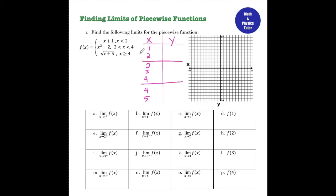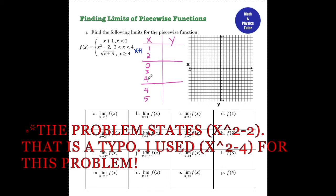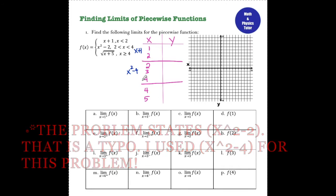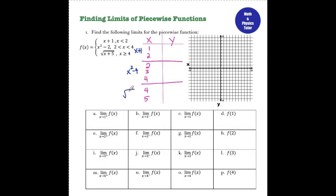When I set up my table you can see that I split my table into three different pieces. I repeated x equals 2 twice to account for each of these pieces and I repeated x equals 4 to account for each of these pieces. Since this is 2 and numbers less than 2, I'll be graphing x plus 1 for these values. From 2 to 4 I'll be using x squared minus 4, and for numbers greater than 4 I have the square root of x plus 5.